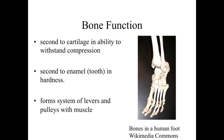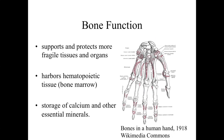Bone is going to form a series of levers and pulleys when we interact the structure of the bone with the structure of the muscles and their anatomical arrangement, allowing for the movement of the body as a whole. Continuing on with these basic functions, bone is going to be surrounding, supporting, and protecting fragile tissues and organs.